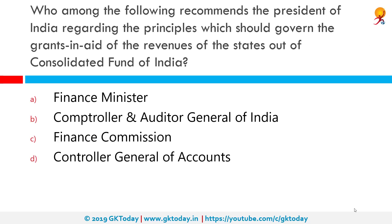Who among the following recommends to the President of India regarding the principles which should govern the grants and aids of the revenues of the state out of the Consolidated Fund of India? The correct answer is the Finance Commission. The key role of the Finance Commission in India is to act as an instrument to divide proceeds of divisible taxes between the states and the union government, and to determine the principles of such allocations.